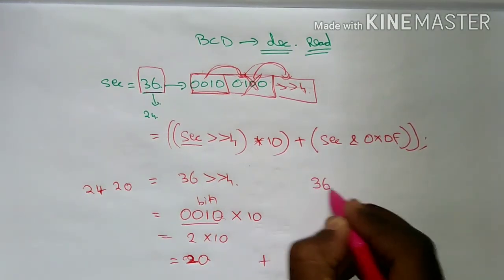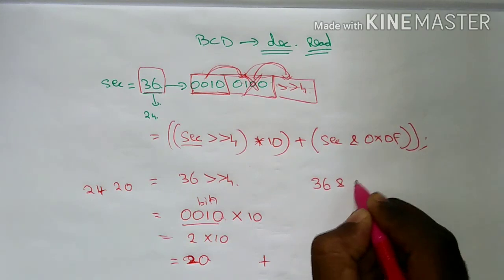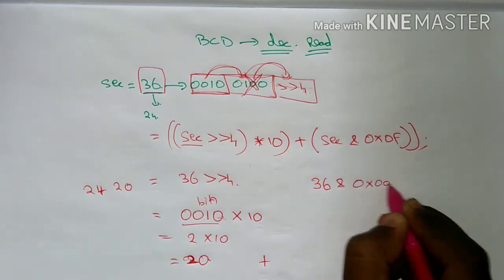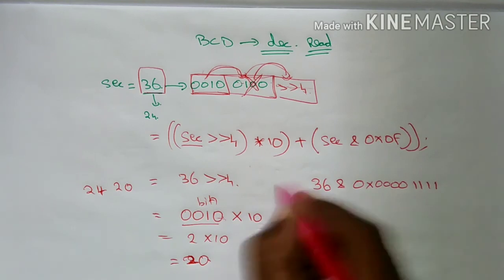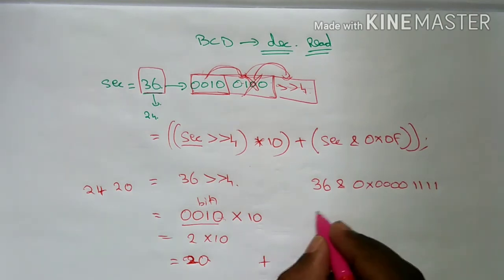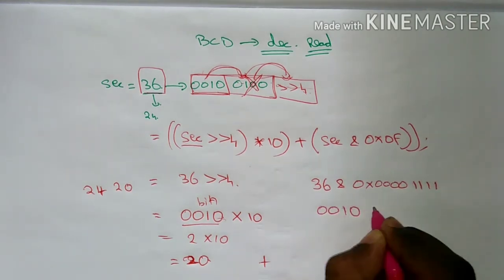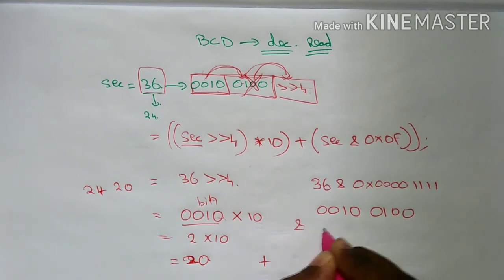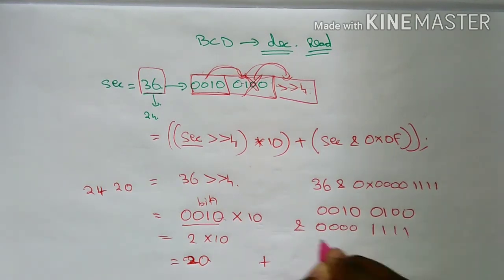36 is going to be 0x00001111. So 36 is going to be 0x00100100. If you do this, you will get 0x00100100.